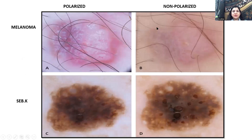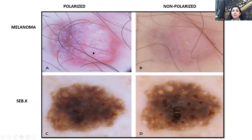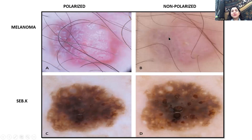Another concept is polarized versus non-polarized. In most dermoscopes today, you can toggle between the two modes with a single button. In melanoma under polarized mode, you see shiny white lines or streaks — called chrysalis — due to newly formed collagen, which is more visible with polarized light penetrating into the dermis. Under non-polarized mode, these shiny white structures disappear.